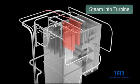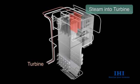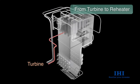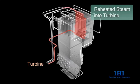The steam is sent to the high pressure steam turbine through the main steam pipe. The steam used in the high pressure steam turbine is returned to the reheater section of the boiler. The reheated steam is sent to the intermediate and low pressure steam turbines through the hot reheat pipe. The steam used by the intermediate and low pressure steam turbines is condensed by the condenser, and the cycle is complete. The water is reused as boiler feed water.